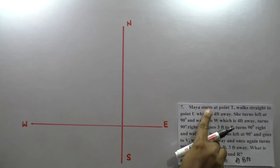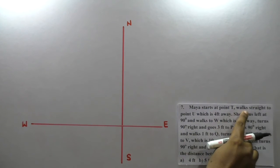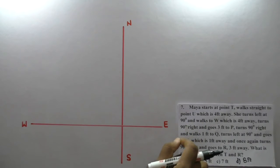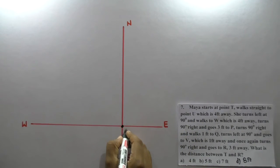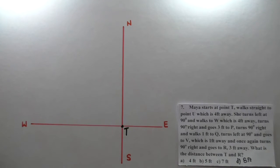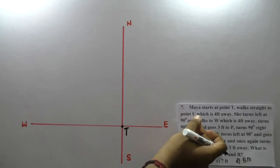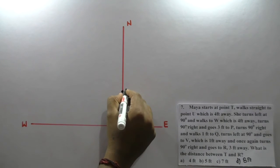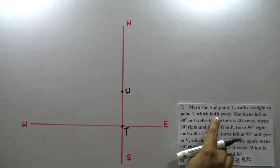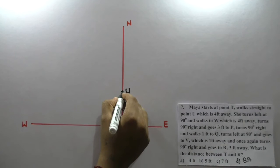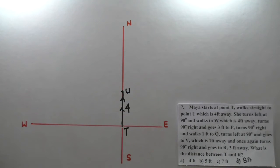Maya starts at point T, walks straight to point U which is four feet away. Starting point is T, walks straight towards north to point U, which is four feet away. Four feet is this distance — the distance is four feet.